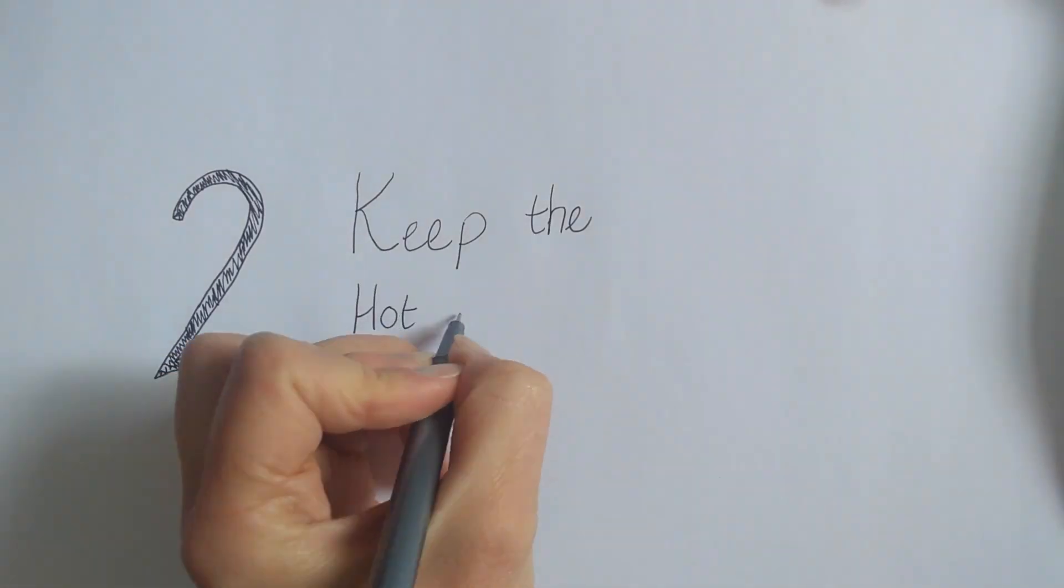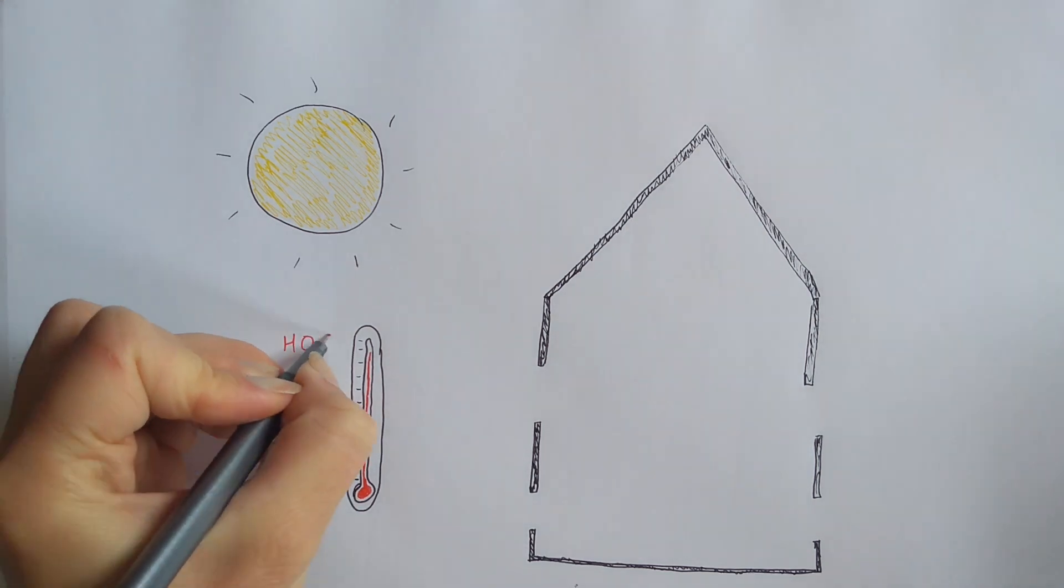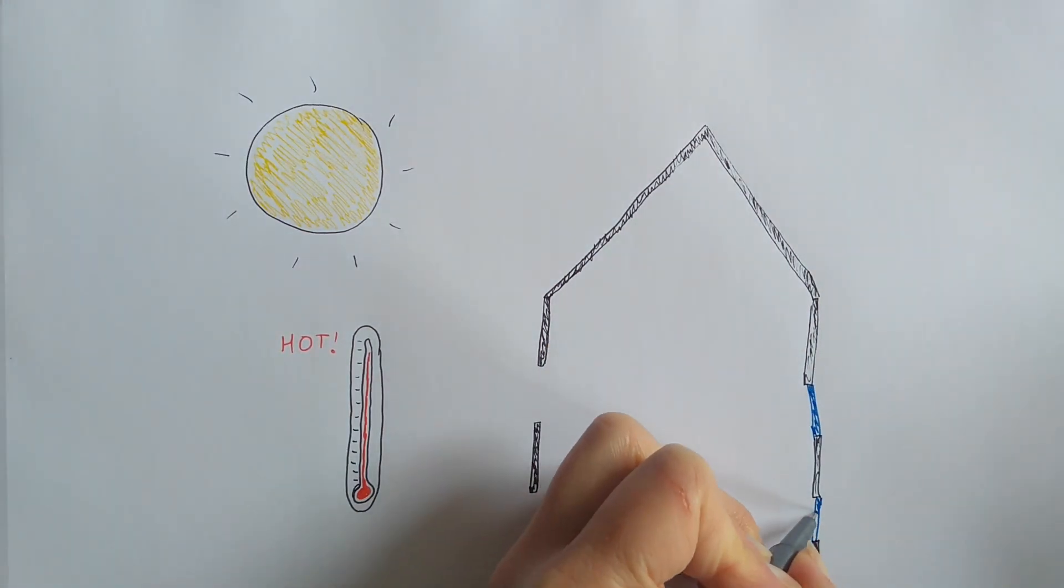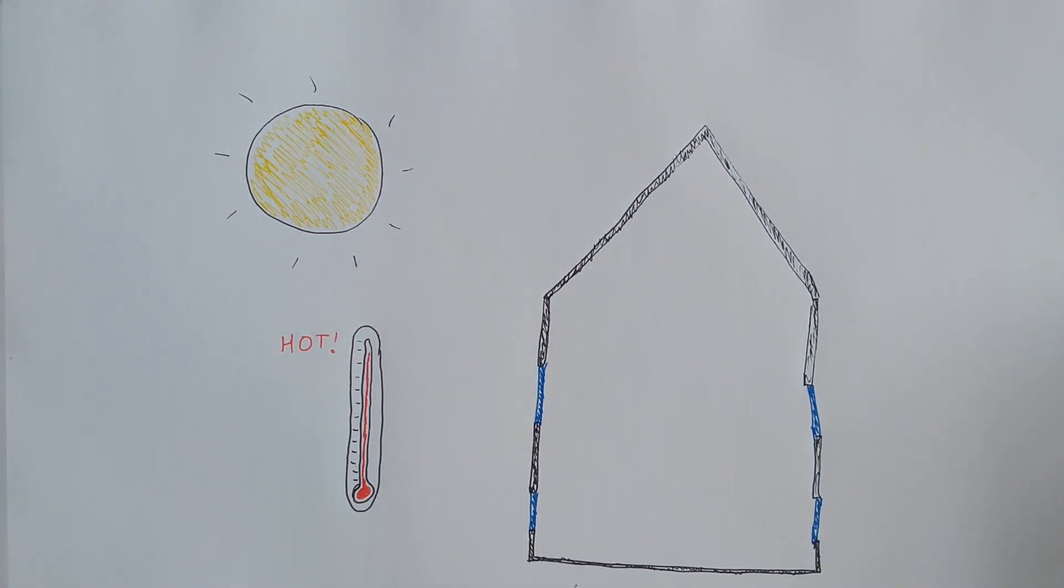Number two, keep the hot air out. If it's hotter outside than in, opening windows will make it warmer inside. So keep the windows closed during the heat of the day.